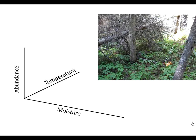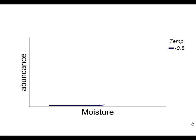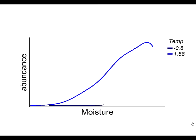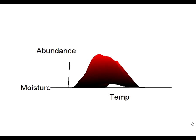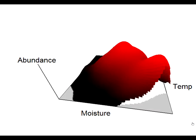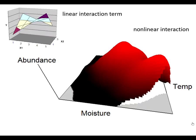Let's switch to a plant's response to moisture and temperature as an example of a nonlinear interaction. We can graph the response to moisture at a series of temperatures. At the lowest temperature, the plant is almost absent. At slightly higher temperature, we see a definite peak abundance in the middle of the moisture range. As temperature increases, the shape of the response curve, the peak height, and the optimum moisture shifts. Converting this to a 3D surface and rotating it reveals the nonlinear species response with strong interaction between temperature and moisture. Compare this with the shape of a linear interaction as described previously.